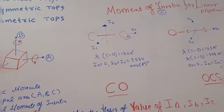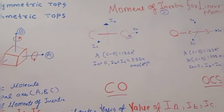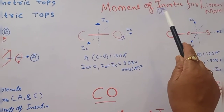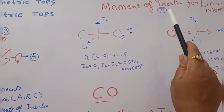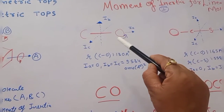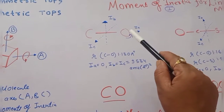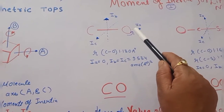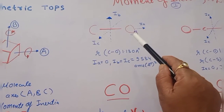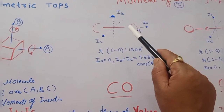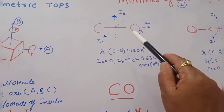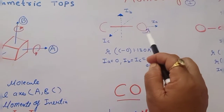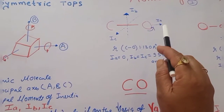The moment of inertia is represented by the symbol I. It is a quantitative measure of the rotational inertia of a body — the opposition a body exhibits to changes in its speed of rotation about an axis. This opposition is produced by a force known as torque.